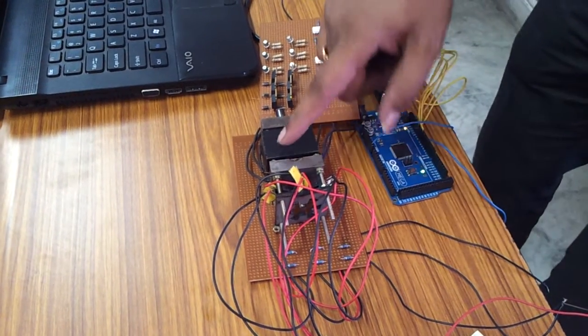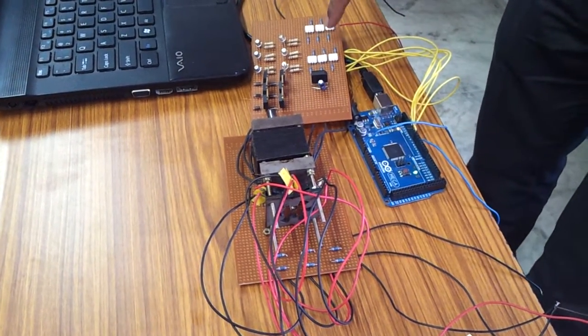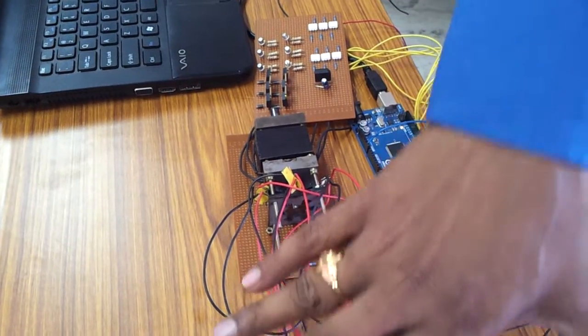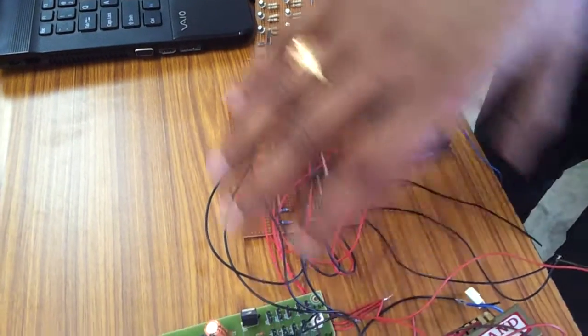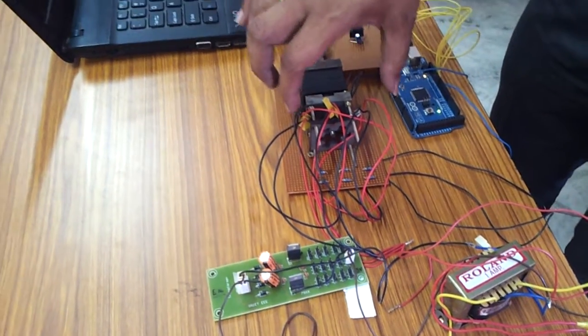And this is my controlling circuit, this is my Arduino board and here is my 5 volt supply which is given to my rotor position sensor circuit.